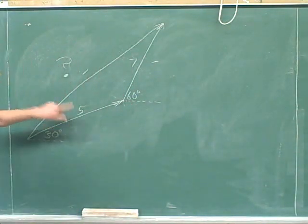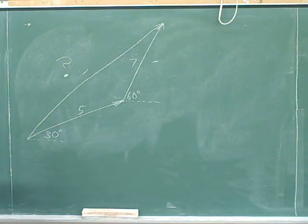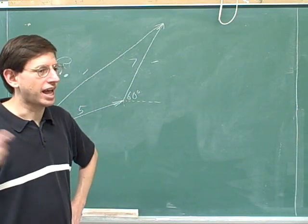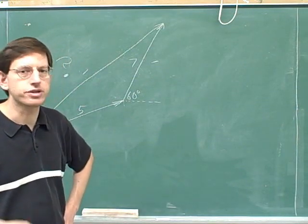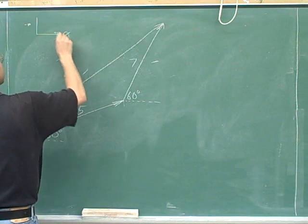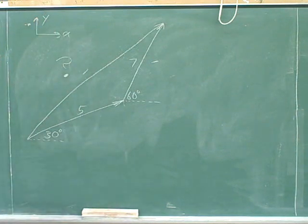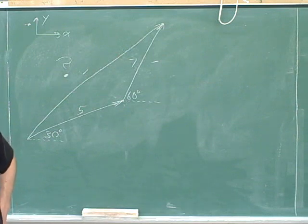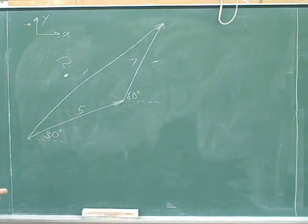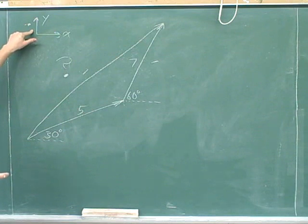Let's break these vectors into components. We can use any axes we like, but it's usually most convenient to choose horizontal and vertical axes. Remember that one of your first steps for any problem should be to write down your axes, indicating the positive directions. On many problems you work on your own, you get to choose your own axes and positive directions. For this problem, horizontal and vertical axes with the standard positive directions are the simplest choice.